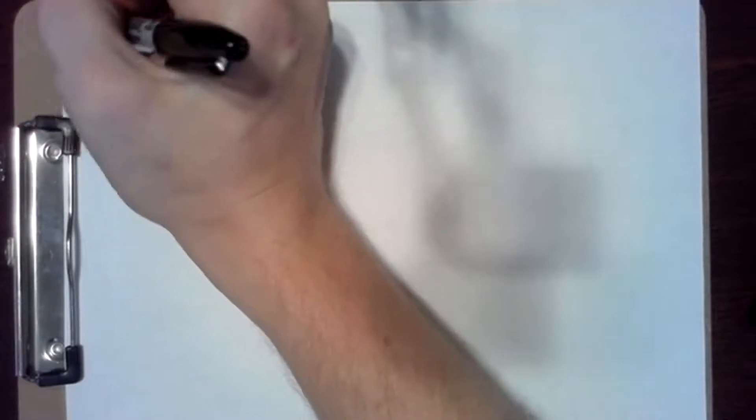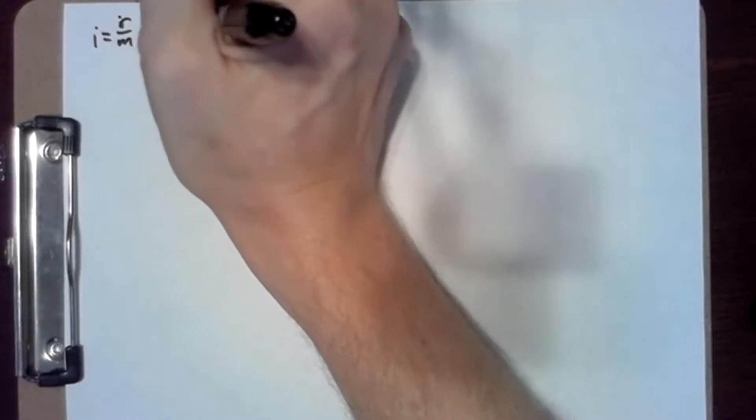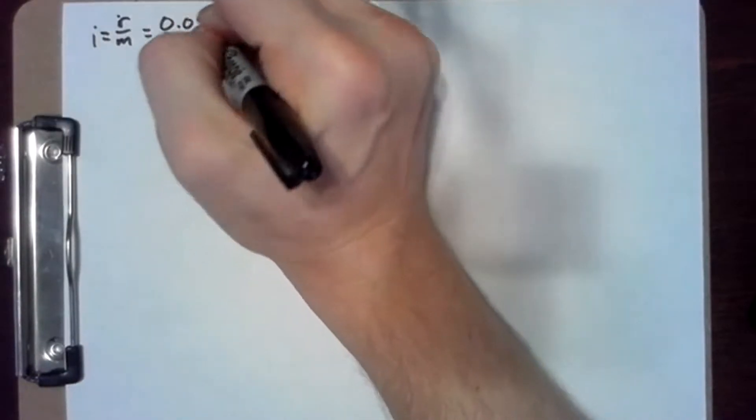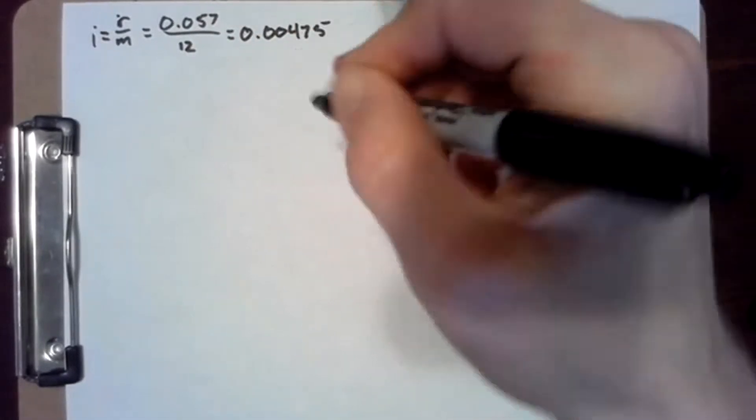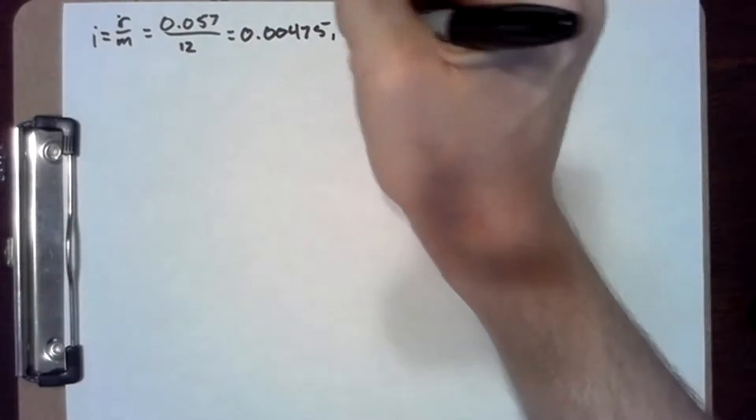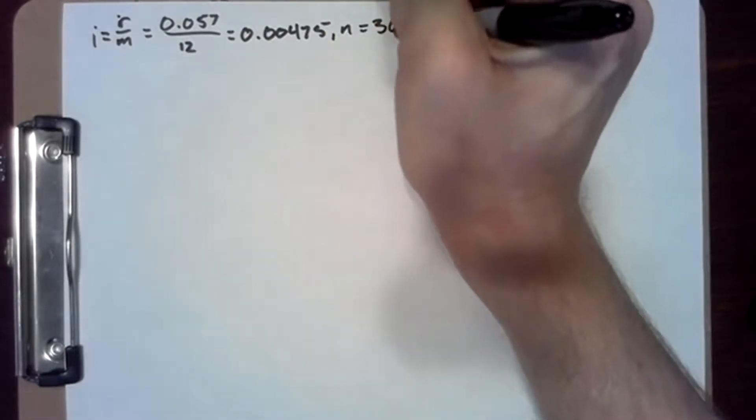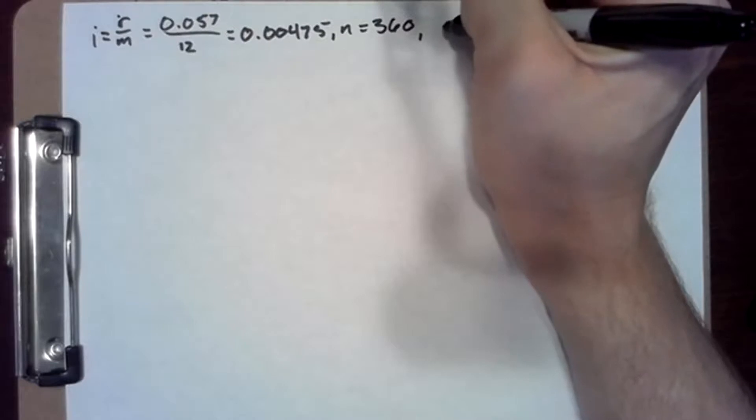With our first problem, with the 7/1 ARM, we have i equals r over m as always, and that in this case is 0.057 over 12, which is 0.00475. And n is 360 and r equals 2000.